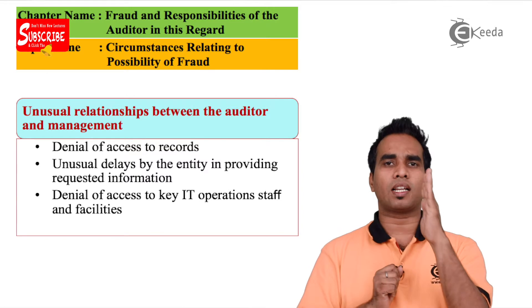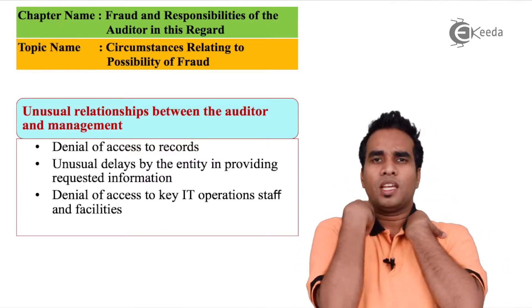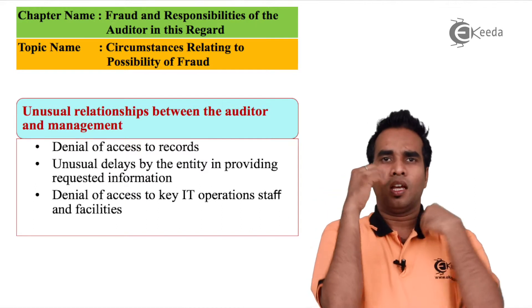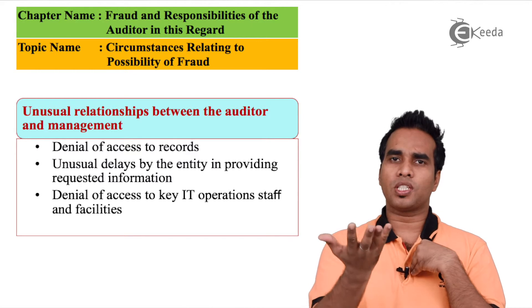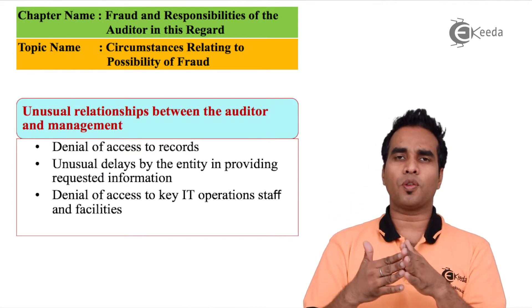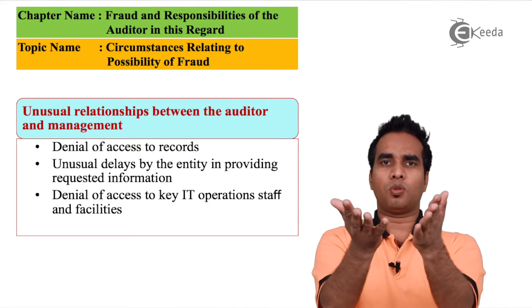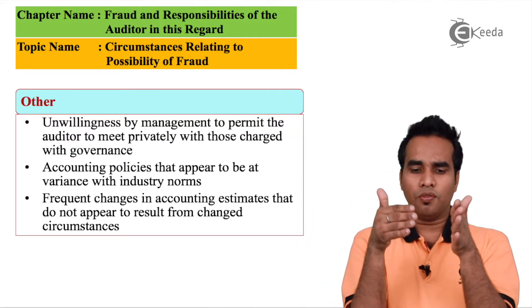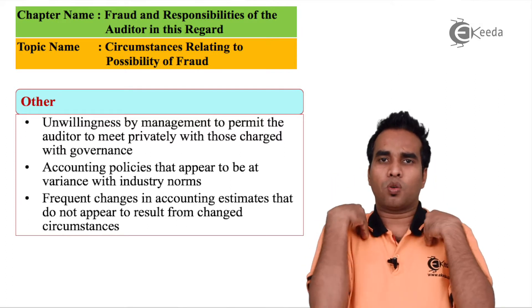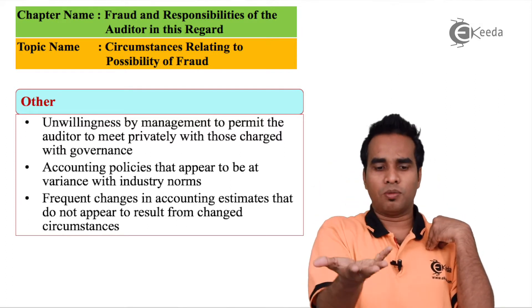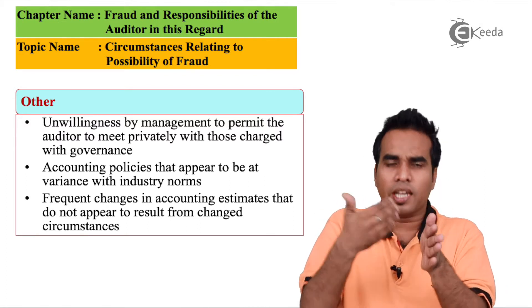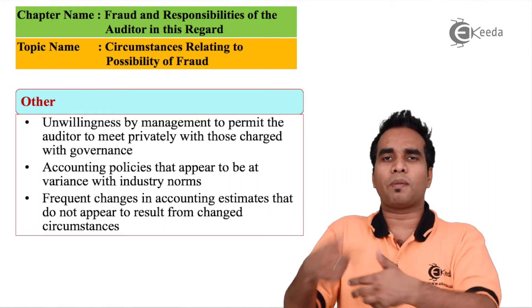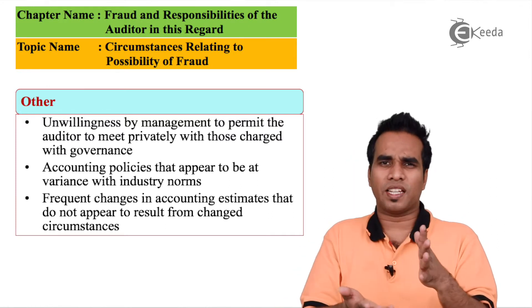Third: unusual relation between the client and auditors. As auditors, we have to check management. If there is unwillingness by management to permit auditors to check or make inquiries, or if there are unusual principle changes, these are indicators of possible fraud.